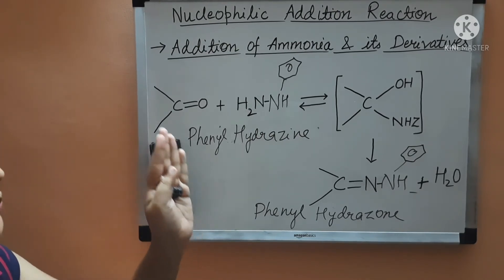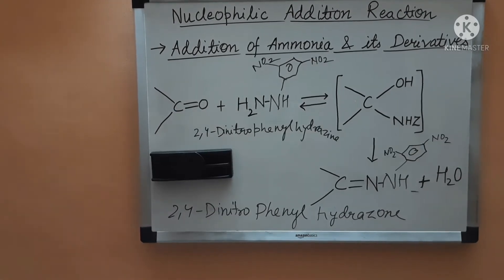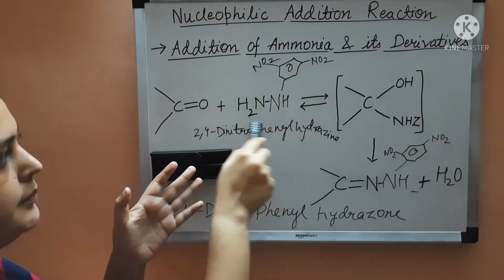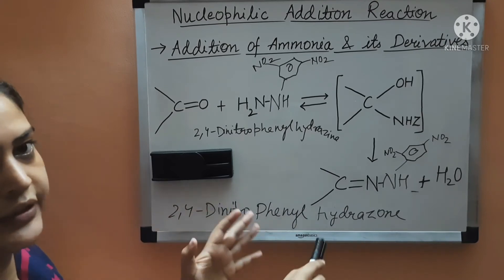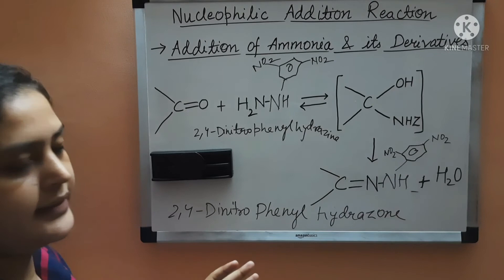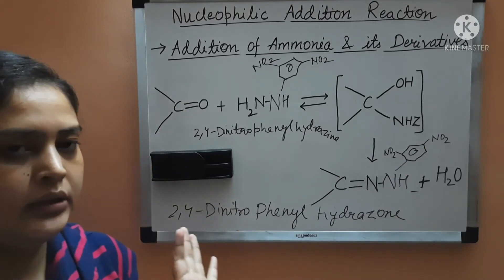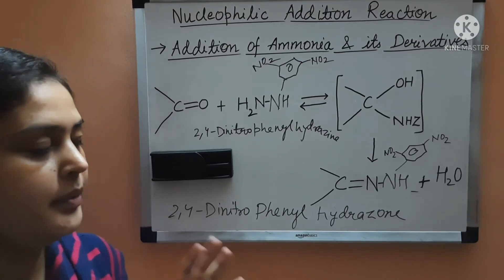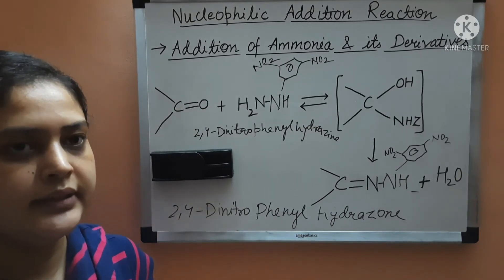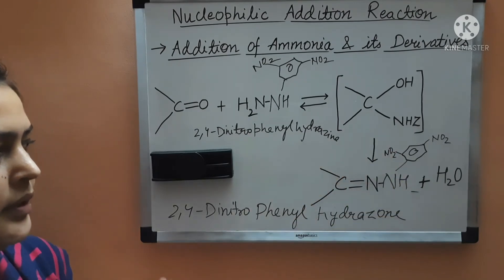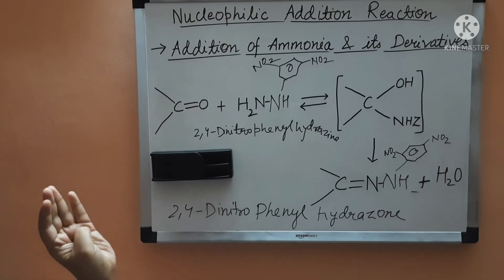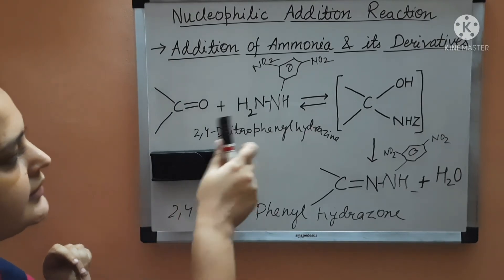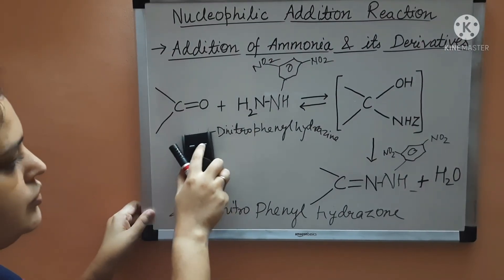With nitro groups at the 2nd and 4th positions, we have 2,4-dinitrophenyl hydrazine, and the product is called the 2,4-dinitrophenyl hydrazone — the 2,4-DNP derivative. This derivative is used as a test to determine whether a compound is an aldehyde or ketone, because this compound is colored — it is yellow, orange, or red. This 2,4-DNP derivative is always colored with aldehyde or ketone, indicating that you have an aldehyde or ketone as your compound.